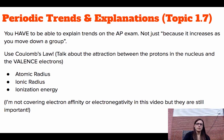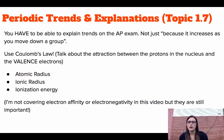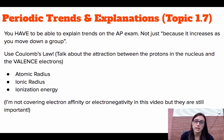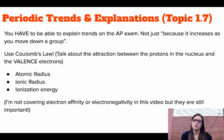From Unit 1, periodic trends is Topic 1.7. You didn't miss many questions on periodic trends in the multiple choice, but on the AP exam you have to be able to explain the trends in free response. You cannot just say 'because it increases as you move down a group.' To explain, you have to use Coulomb's Law — talking about the attraction between the positively charged protons in the nucleus and the negatively charged valence electrons. Always compare your protons to your valence electrons. I'll focus specifically on atomic radius, ionic radius, and ionization energy.